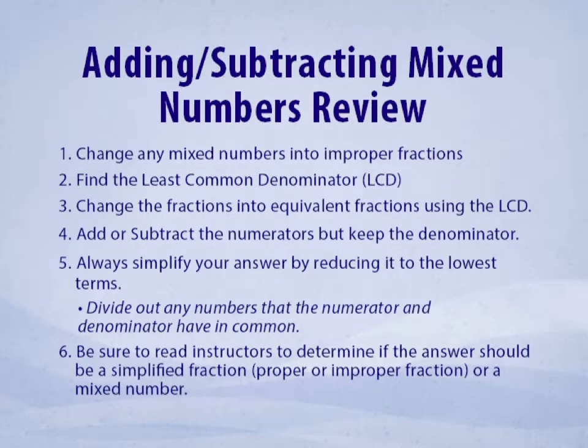When adding or subtracting mixed numbers, we're going to change any mixed number to an improper fraction. Then we'll find the least common denominator. We'll change the fractions into equivalent fractions using the least common denominator, and then we'll add or subtract the numerators while keeping the denominator.